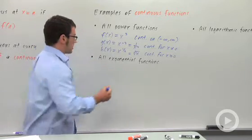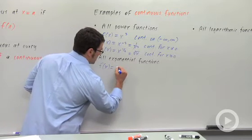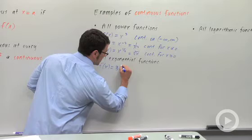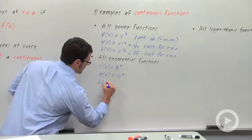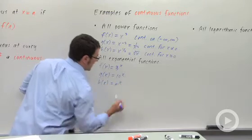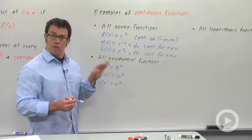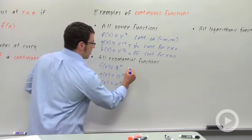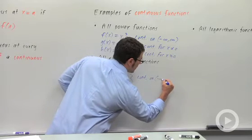All exponential functions are continuous. Examples: f(x) = 3^x, g(x) = 10^x, h(x) = e^x. All of these functions, all exponential functions are continuous everywhere. They're defined for all real numbers, so all of them are continuous from negative infinity to infinity.